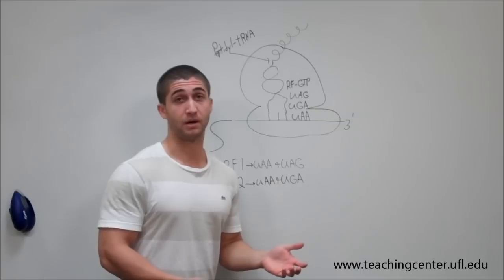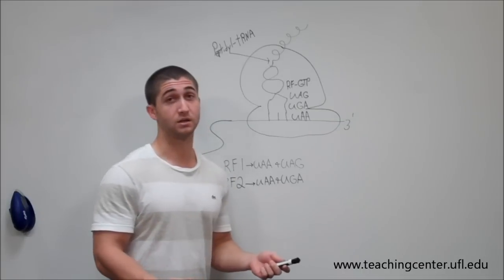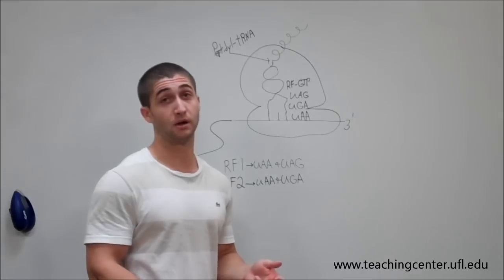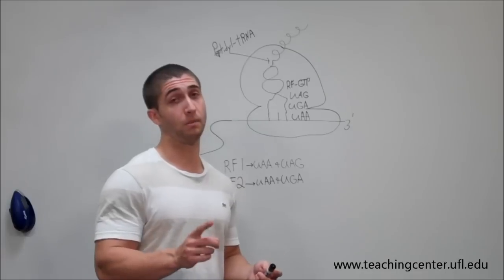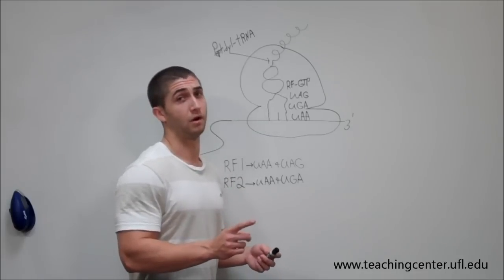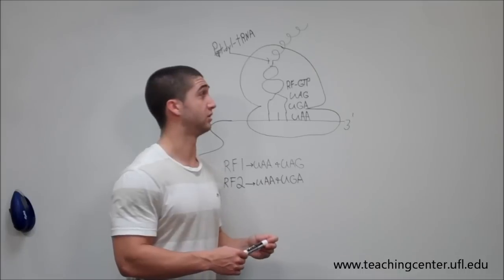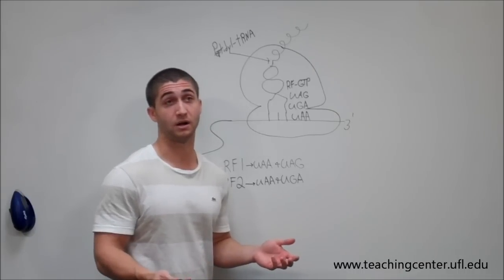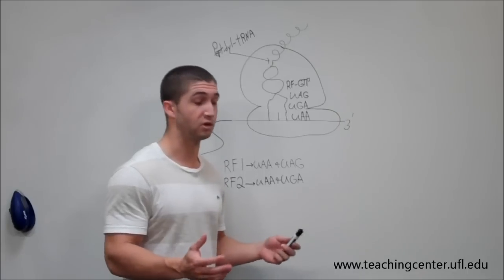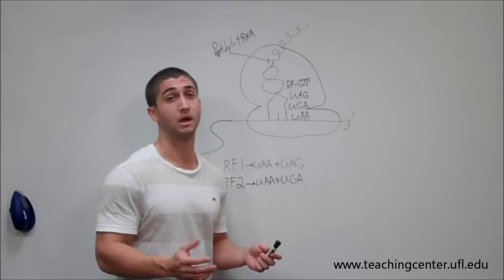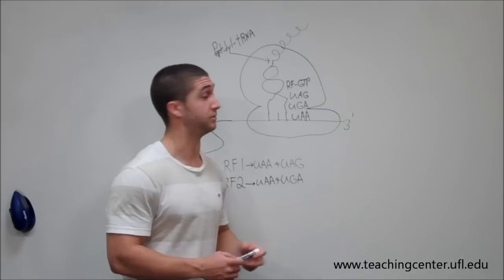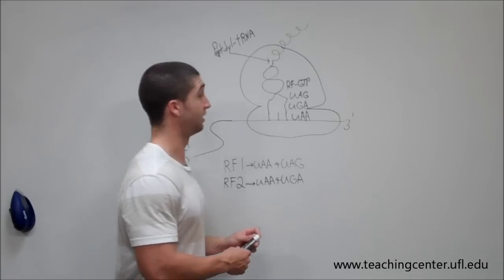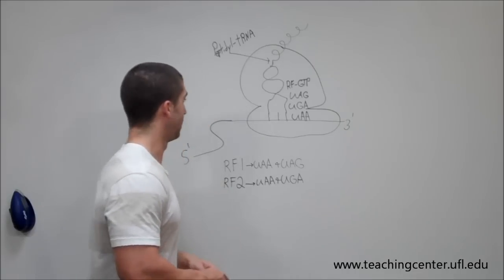Another side note, a good thing to remember is eukaryotic mRNAs are going to be monocistronic which means that only one polypeptide can be formed from a single eukaryotic mRNA transcript. On the other hand, prokaryotes are called polycistronic which means multiple polypeptides can be formed using only one prokaryotic mRNA transcript. So that's just a good note, a good thing to remember for this test and that is it.